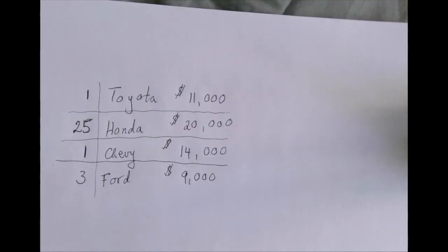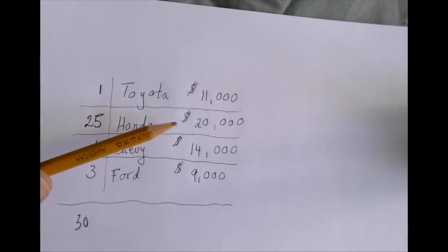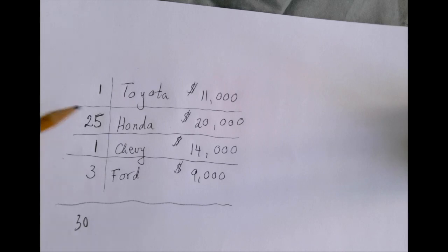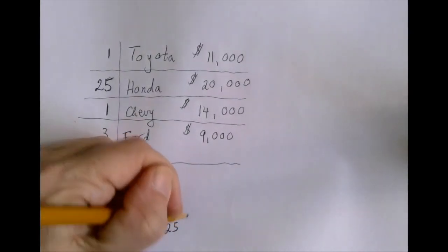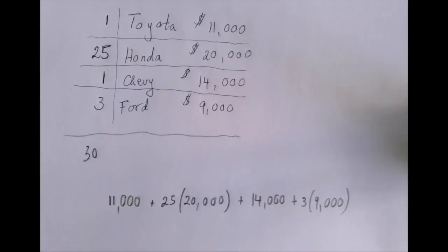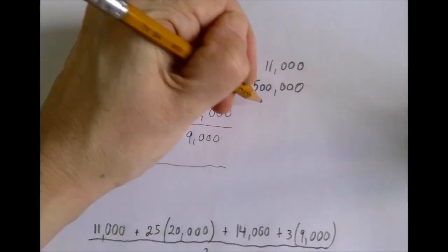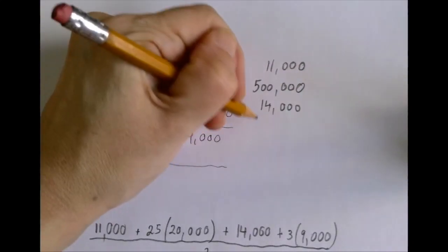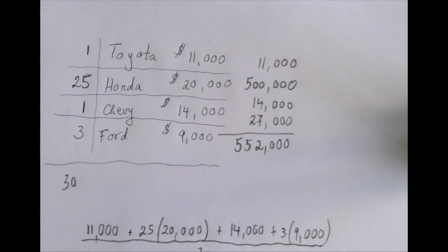Now let's look at another example. We're still dealing with 30 cars, but the distribution is different — now we have a whole lot of expensive cars. We have 25 of the 30 being the most expensive, so we should suspect this average will be much higher. Computing: (1×11,000 + 25×20,000 + 1×14,000 + 3×9,000) ÷ 30 = (11,000 + 500,000 + 14,000 + 27,000) ÷ 30. The total is $552,000.